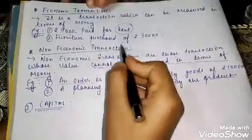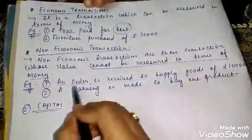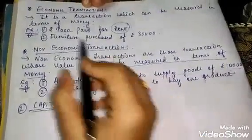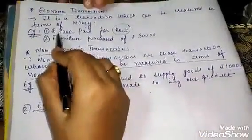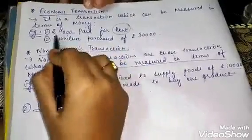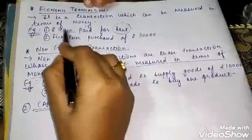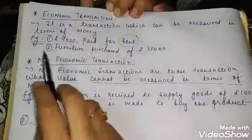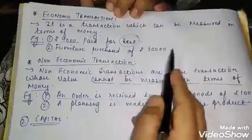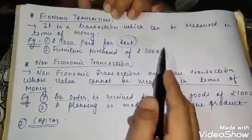Since money is not yet involved, this is a non-economic transaction. In contrast, the earlier example of rent had money involved. Second example of an economic transaction: 'Furniture purchased for rupees 30,000.' This is clearly an economic transaction.